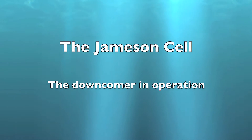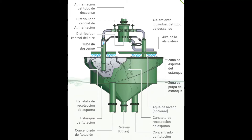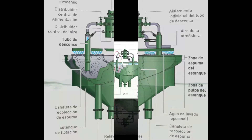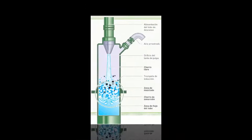In this short movie we'll look at a downcomer in operation. Here we see a Jameson cell, and now the downcomer is highlighted. Feed and air enter at the top of the cell, the froth product discharges into the launder, and the tailings leave at the bottom. Note the wash water distributor trays located above the froth layer.